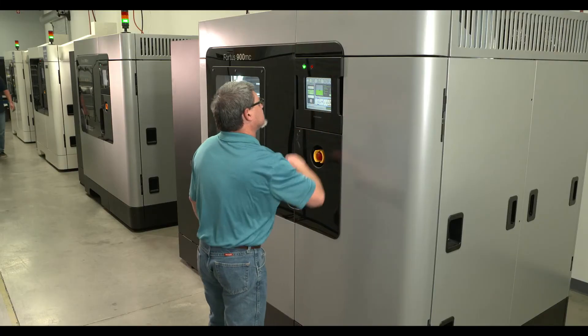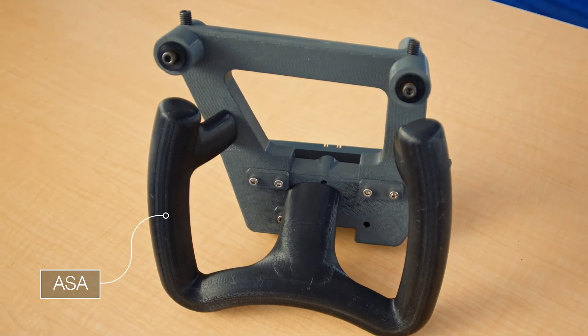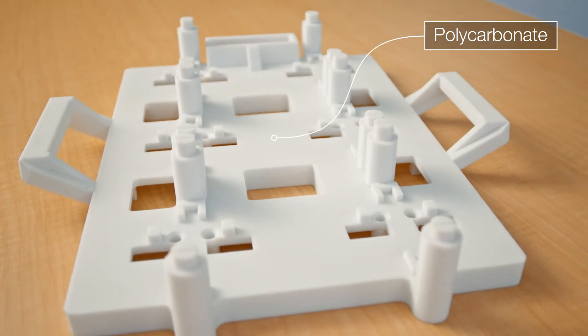Depending on what the application is, the material might differ. So for instance, for a low-end application, ASA might be an appropriate material. If there's higher requirements on the inspection fixture, something like polycarbonate like you see here might be more appropriate. But depending on the application, Stratasys FDM printers have a wide variety of solutions available.